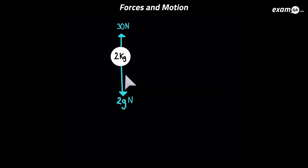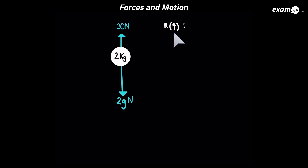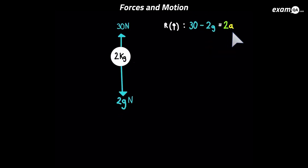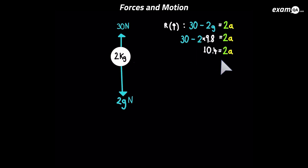Now the surface is gone and there's also an upward force of 30 newtons applied. The particle moves upwards because 2 times 9.8 is 19.6, and 30 is greater than 19.6. Resolving vertically with upwards as positive: 30 minus 2g equals 2a. Substituting g as 9.8 and solving, we divide both sides by 2 and work out the acceleration: 5.2 metres per second squared.